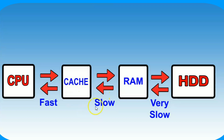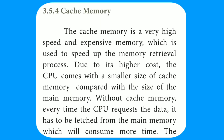From the book: cache memory is very high speed and expensive memory, which is used to speed up the memory retrieval process. Due to its higher cost, the CPU comes with a smaller size of cache memory compared with the size of main memory, which is RAM. RAM cannot be the same size as cache memory due to higher cost.